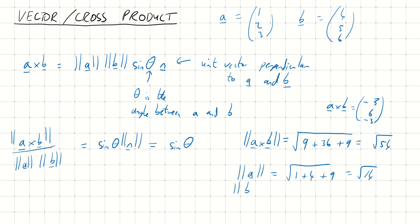And the magnitude of B is the square root of 4 squared, which is 16, plus 5 squared, plus 6 squared. And that is the square root of 77.